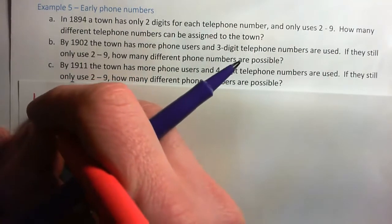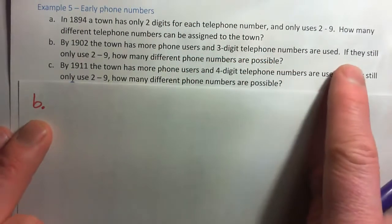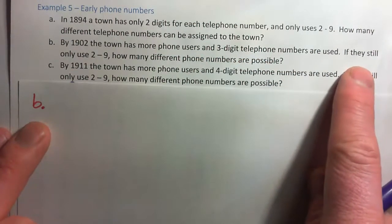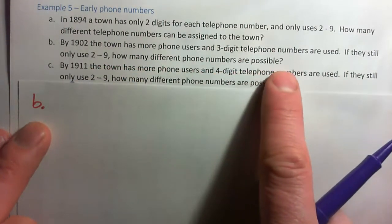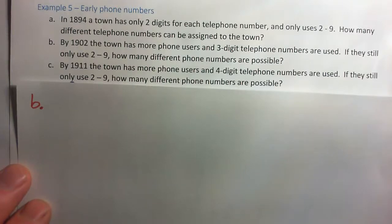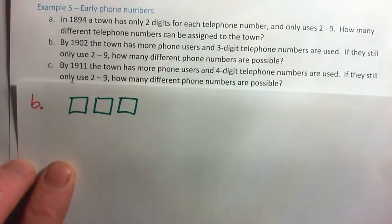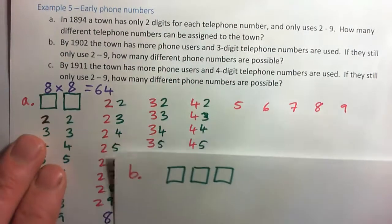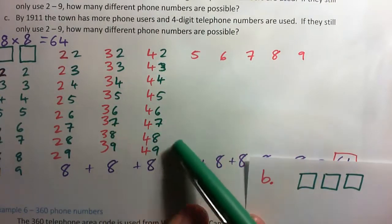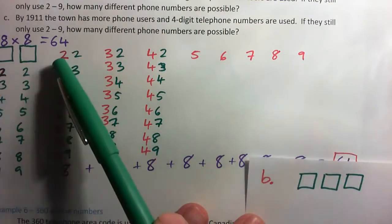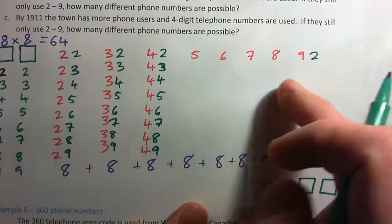So, part B. By 1902 the town has more phone users and 3-digit telephone numbers are used. If they still only use digits 2 through 9, how many different phone numbers are possible? So this time you've got 3 digits. What I want you to think about is we almost listed all 64 of the possible 2-digit phone numbers.